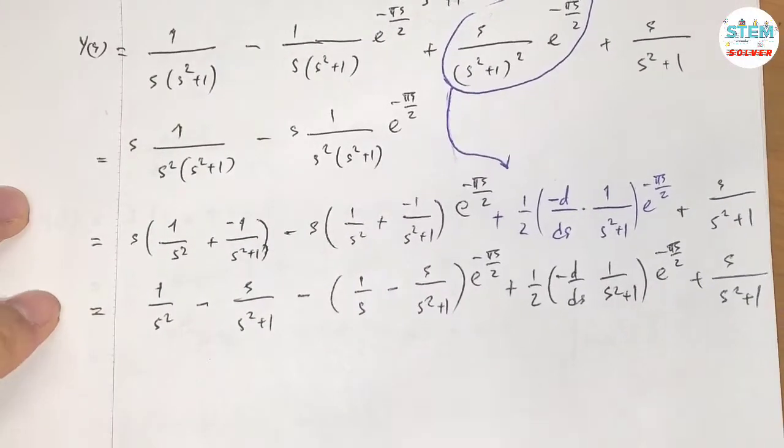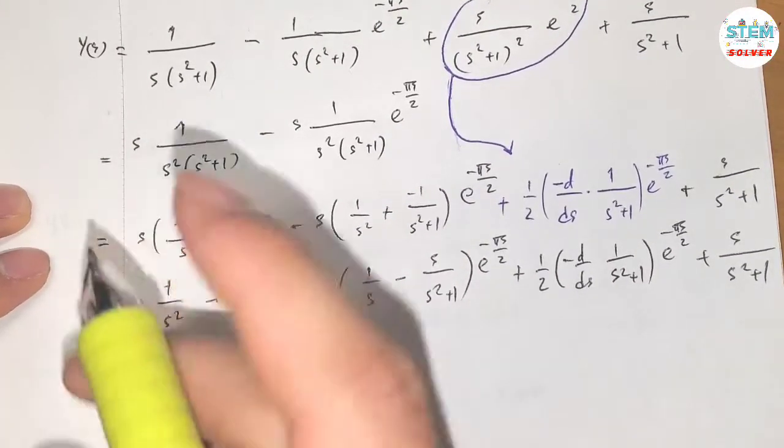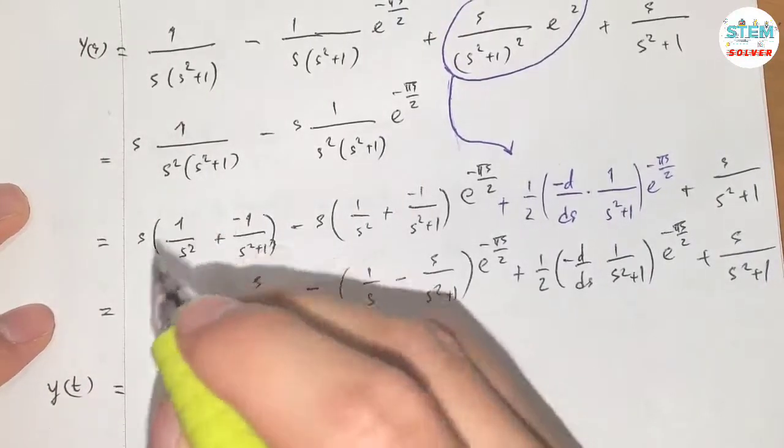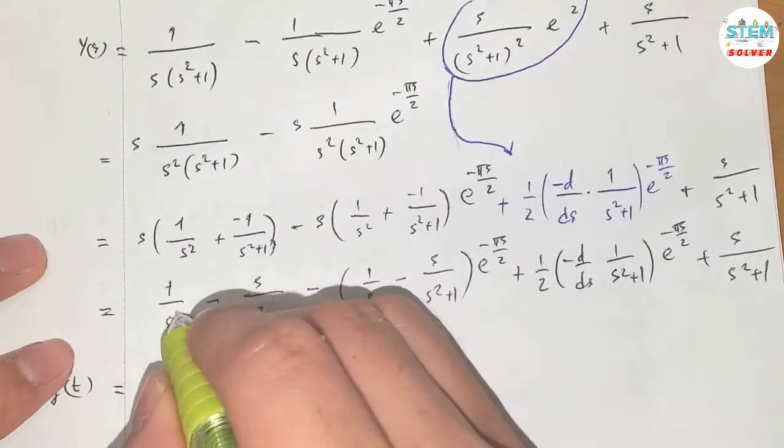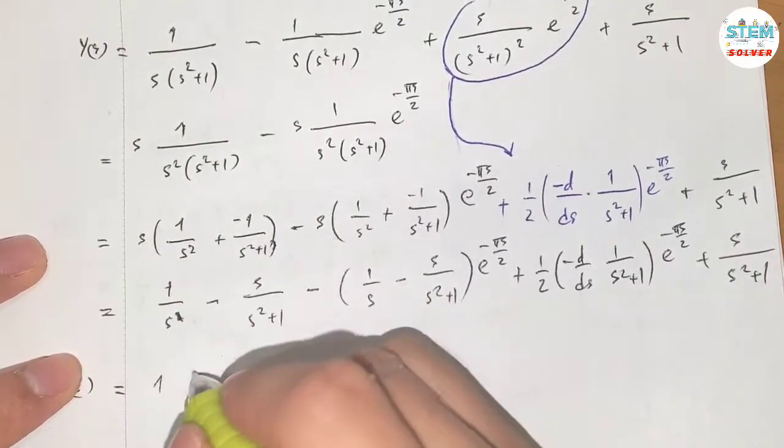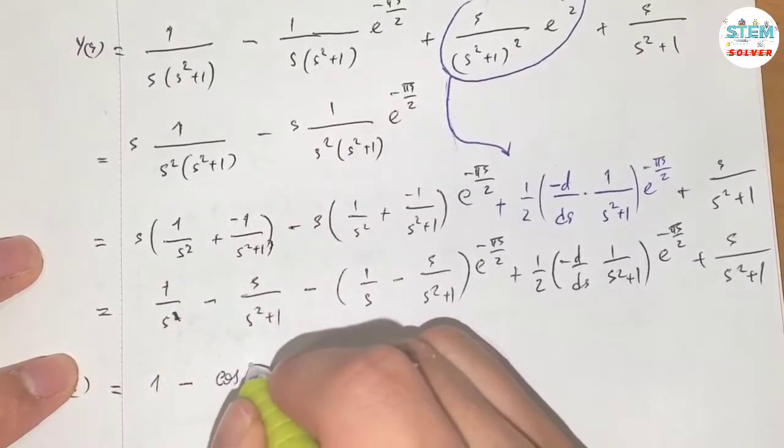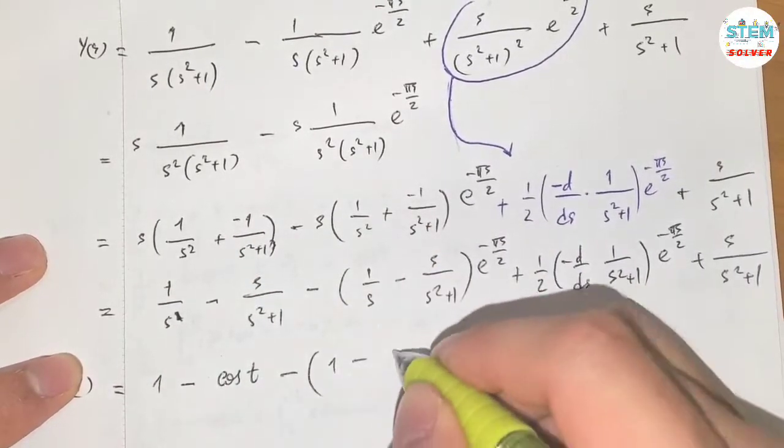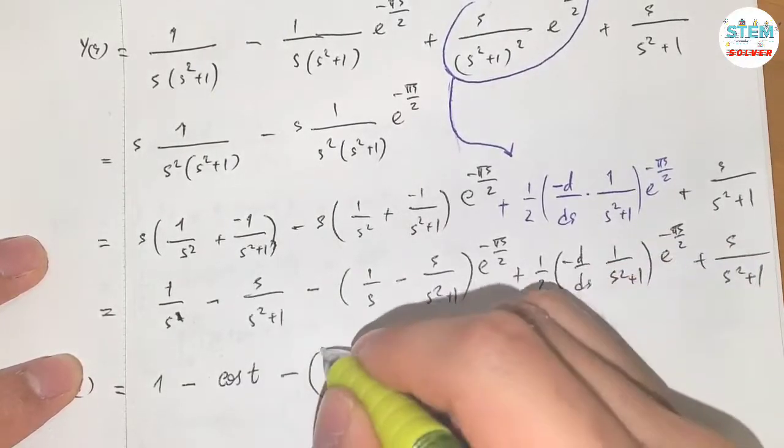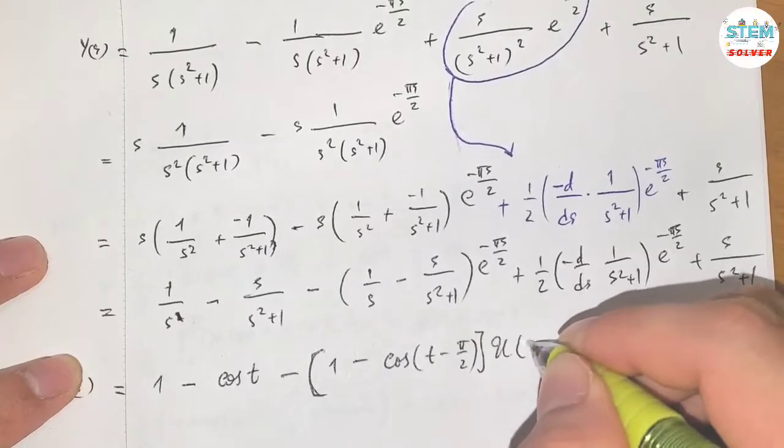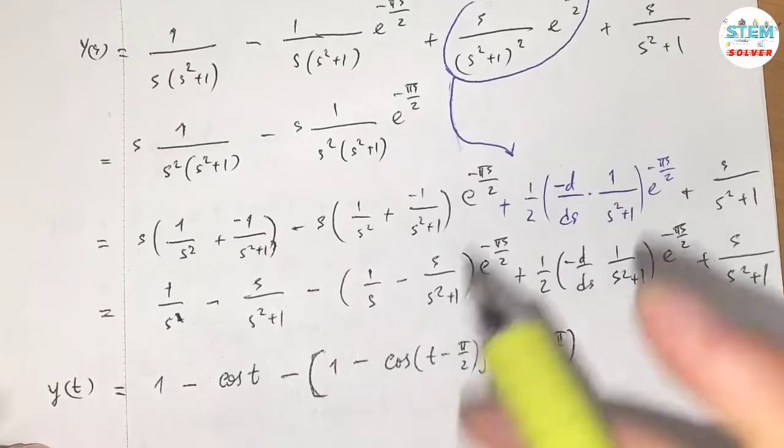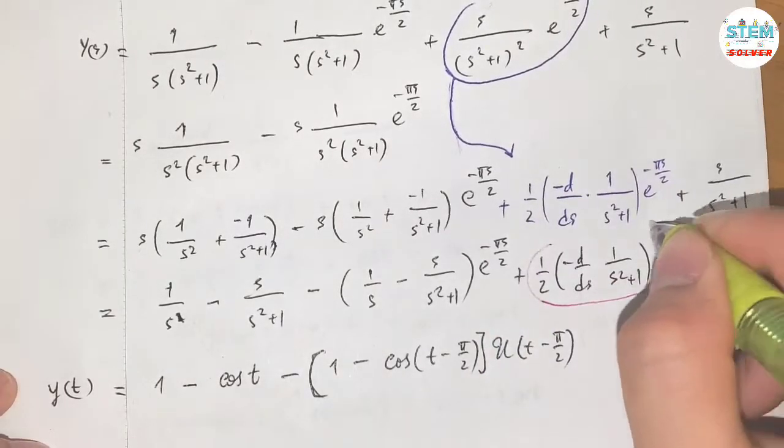Now I'll apply the inverse on both sides. On the left side I have y of t. On the right side I have 1, oh this is just 1 over s. Why? Because s over s, so it's just 1 over s. I get 1 minus, so this is cosine t minus 1 minus cosine of t minus pi over 2 times u of t minus pi over 2.